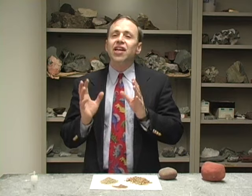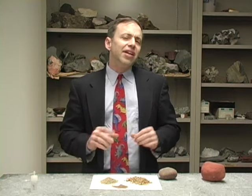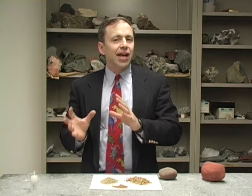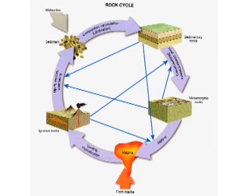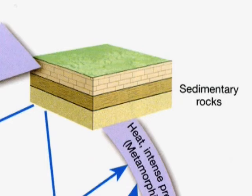Last week we looked at igneous rocks, which we said came from a melt. Now the next step in our rock cycle, as we looked at it, is to look at sedimentary rocks.